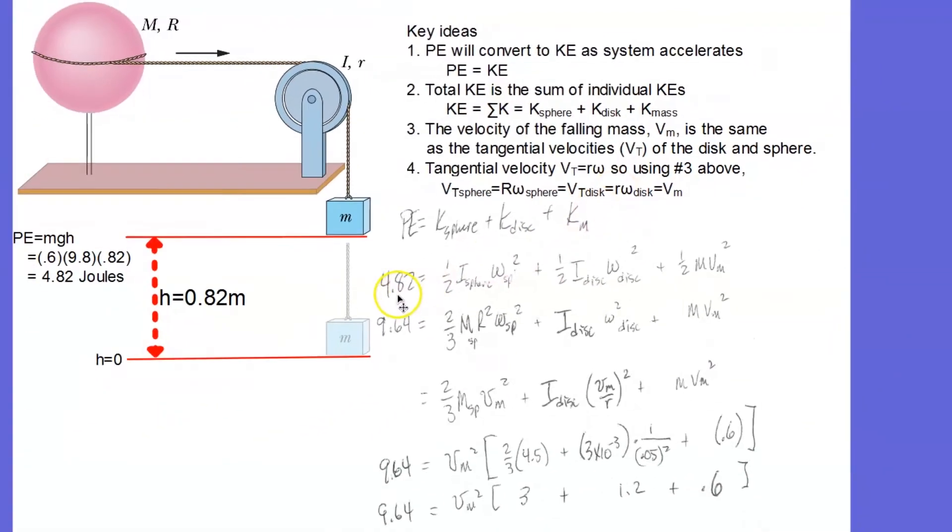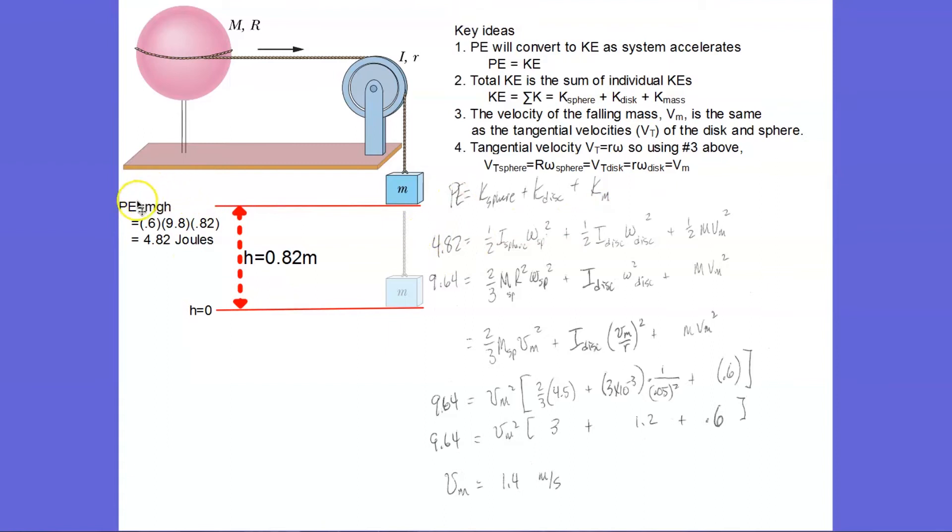Okay, so here's our solution. The potential energy, which we calculate over here, mass times gravity times the change in height, is 4.82 joules.